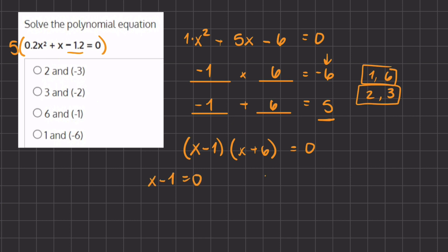We're going to set both of our parentheses equal to 0. So we have x - 1 = 0 and x + 6 = 0, and we're going to solve for the value of x.